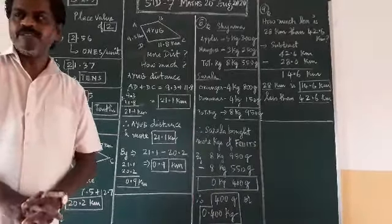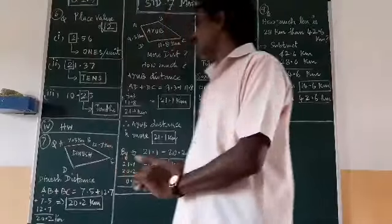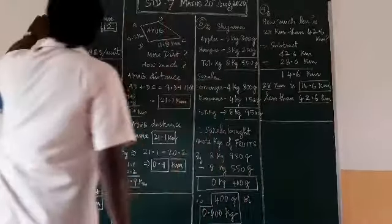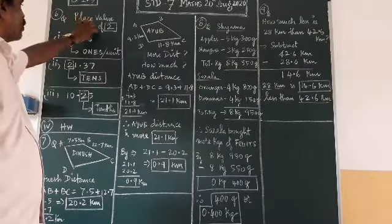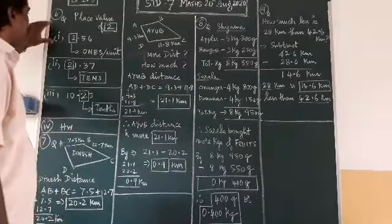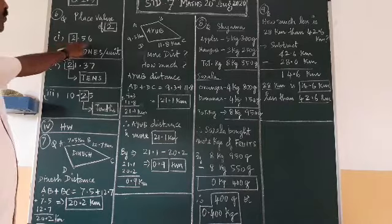In continuation with the previous board work, we are continuing with the 6th question. What is the place value of 2 in the given following numbers? They asked me. So you have to find place value from the given numbers. Number 1, 2.56.